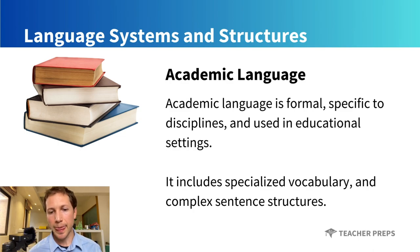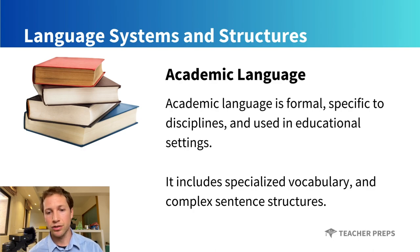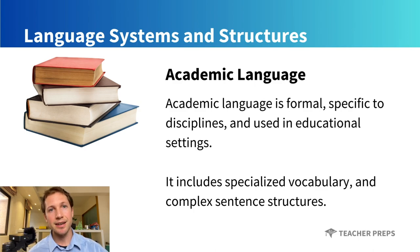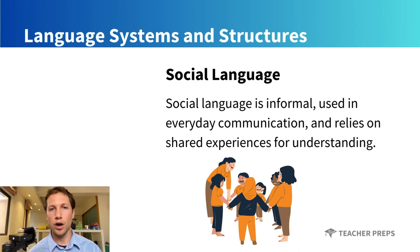Academic language includes specialized vocabulary and complex sentence structures that you might see in a specific context or class. On the other hand, social language is informal, used in everyday communication, and relies on shared experiences for understanding.